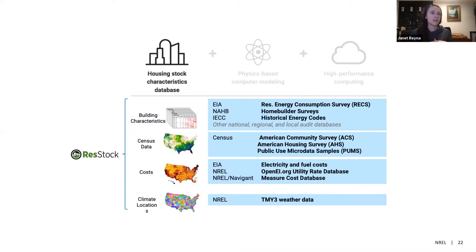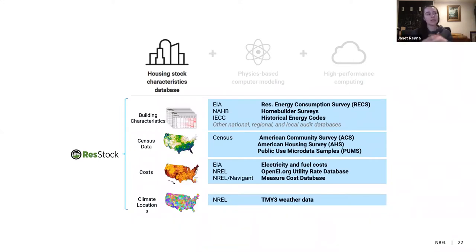For example, the Pacific census division includes Hawaii and Alaska, which are kind of unique cases, as well as California, Oregon, and Washington. So those five states are all grouped together in the same census division, which creates a challenge in understanding what's really happening when Alaska and California are really different places.